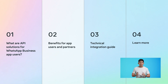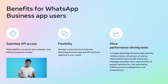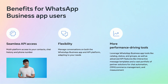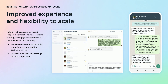Let's talk about why this is so exciting for both app users and developers. When using the WhatsApp business app, this feature will offer: one, multi-platform access to contacts and chat history; two, flexibility to manage conversations from both the app and with a partner; and three, more tools at your fingertips. Everything the business app has today plus advanced API features like interactive message templates and other partner solutions. This all provides ultimate flexibility for businesses to scale their messaging strategy.